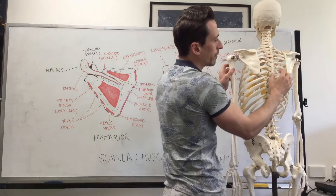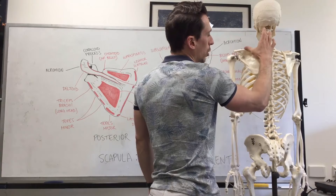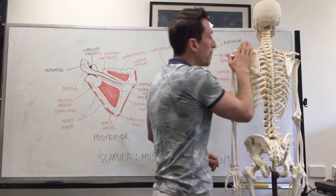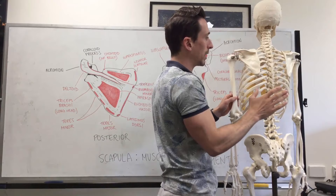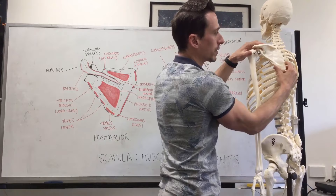When it comes to lateral rotation, what plays a role here is the upper fibers of the trapezius and also the serratus anterior. When it comes to medial rotation, what plays an important role is the rhomboids predominantly, but also the pectoralis minor. When that contracts, it pulls this part downwards, which brings this part of the scapula medially.